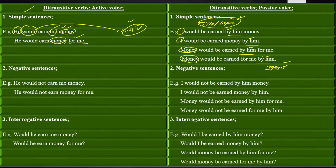The new subject is not the doer of the action — it is called the title and topic subject, meaning a person, place, or thing we are talking about. The four passive sentences are: 'I would be earned by him money.' 'I would be earned money by him.' 'Money would be earned by him for me.' 'Money would be earned for me by him.'